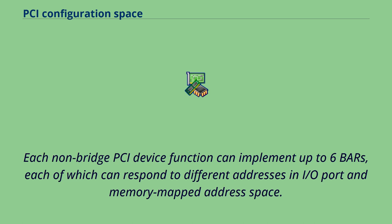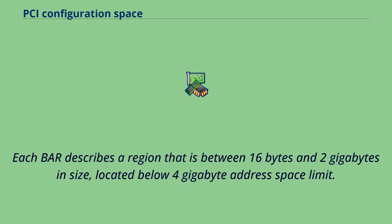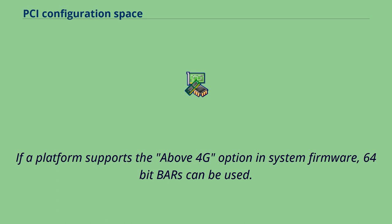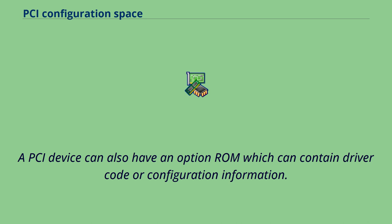Each non-bridge PCI device function can implement up to six BARs, each of which can respond to different addresses in I/O port and memory-mapped address space. Each BAR describes a region between 16 bytes and 2 gigabytes in size, located below the 4 gigabyte address space limit. If a platform supports the above-4G option in system firmware, 64-bit BARs can be used. A PCI device can also have an option ROM which can contain driver code or configuration information.